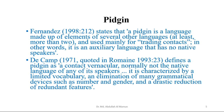Fernandez states that a Pidgin is a language made up of elements of several other languages — at least more than two — and used mainly for trading contacts, maybe business. In other words, it is an auxiliary language, an additional language, that has no native speakers. Decamp, quoted in Romaine, defines a Pidgin as a contact vernacular.